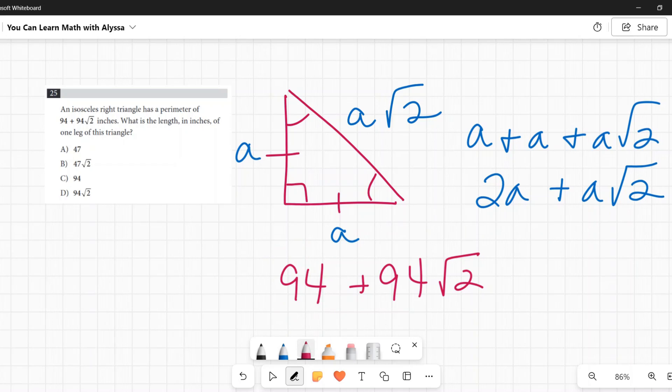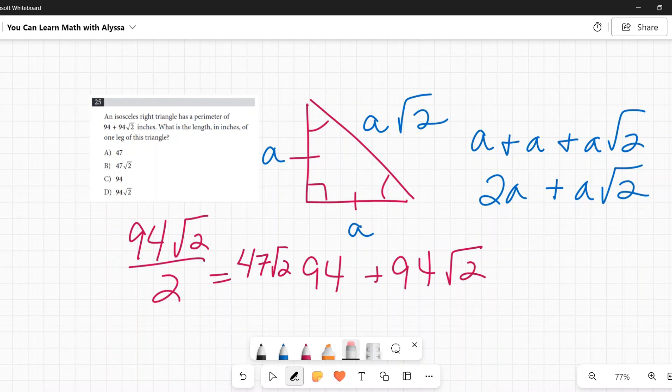Let's test that theory. Let's see if we're down the right path. If this is equal to two times a, let's divide it by two. So 94 square root of two is equal to two times a. We want to find what a is. We need to divide it by two, so I can divide that 94 by two and I get 47 times the square root of two for a.